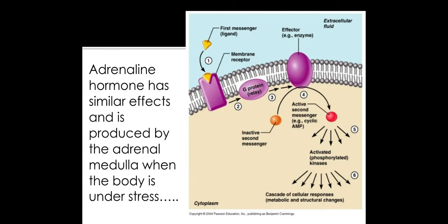Adrenaline is a hormone which is produced from the adrenal medulla. It's produced when the body is under stress and it can trigger similar responses such as releasing more glucose from the liver from those hepatocytes within the liver. However, because adrenaline is a protein-based hormone, a peptide hormone, it cannot diffuse through the phospholipid bilayer, so it has to trigger a response inside the cell by using the first messenger and second messenger response.